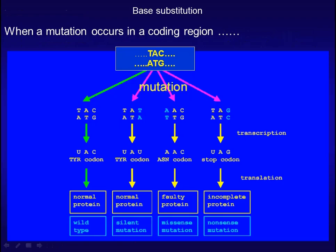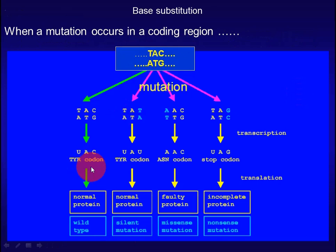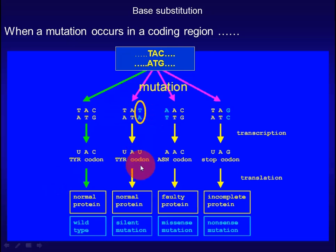When a mutation occurs in a coding region, for example, the template strand of a DNA contains TAC, corresponding to a codon UAC, which codes for the amino acid tyrosine. When C is replaced by T, the codon UAU still codes for the same amino acid tyrosine. This type of mutation is called a silent mutation.